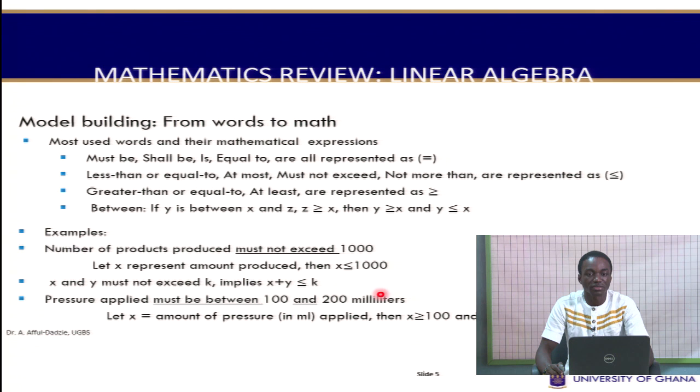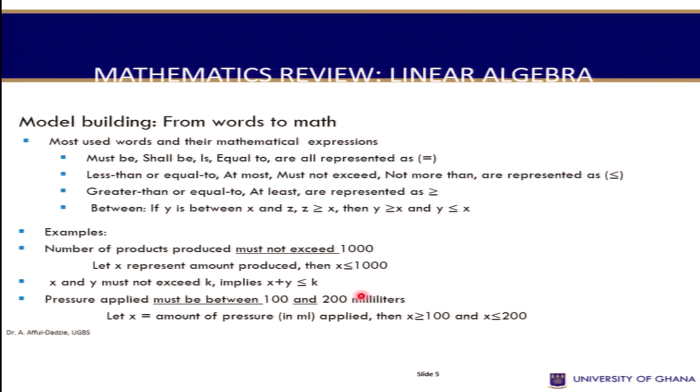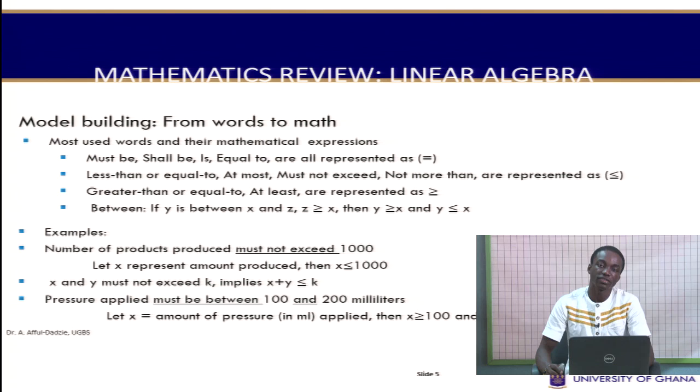If x and y must not exceed a certain value k, then x plus y should be less than or equal to k. Also, if the pressure applied must be between 100 and 200 milliliters, and x is the pressure applied, then x will be greater than 100 and also less than 200. We use these mathematical connotations in formulating our constraints.